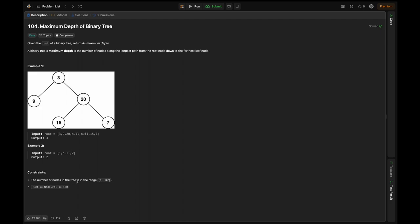The constraints: the number of nodes in the tree is in the range of 0 to 10^4. The node value is in the range of -100 to 100.